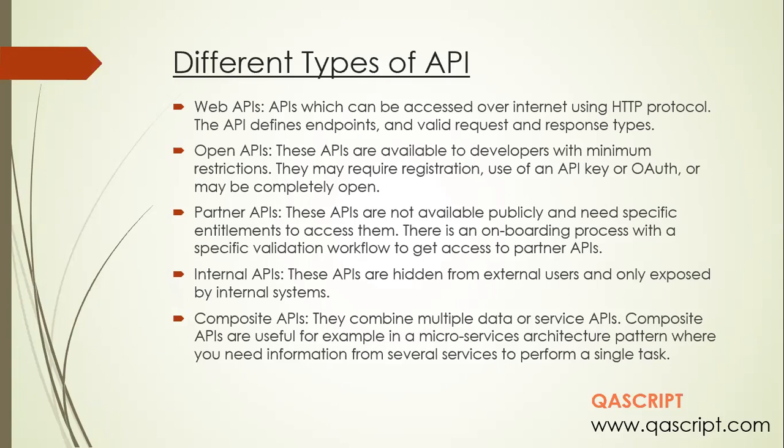Partner APIs are basically between companies who are partners of some other company. These APIs are not publicly available and require specific entitlements to access them. Internal APIs are completely hidden from external users and can only be exposed by internal systems — they are used by internal teams of an organization to build, test, or modify their existing APIs.